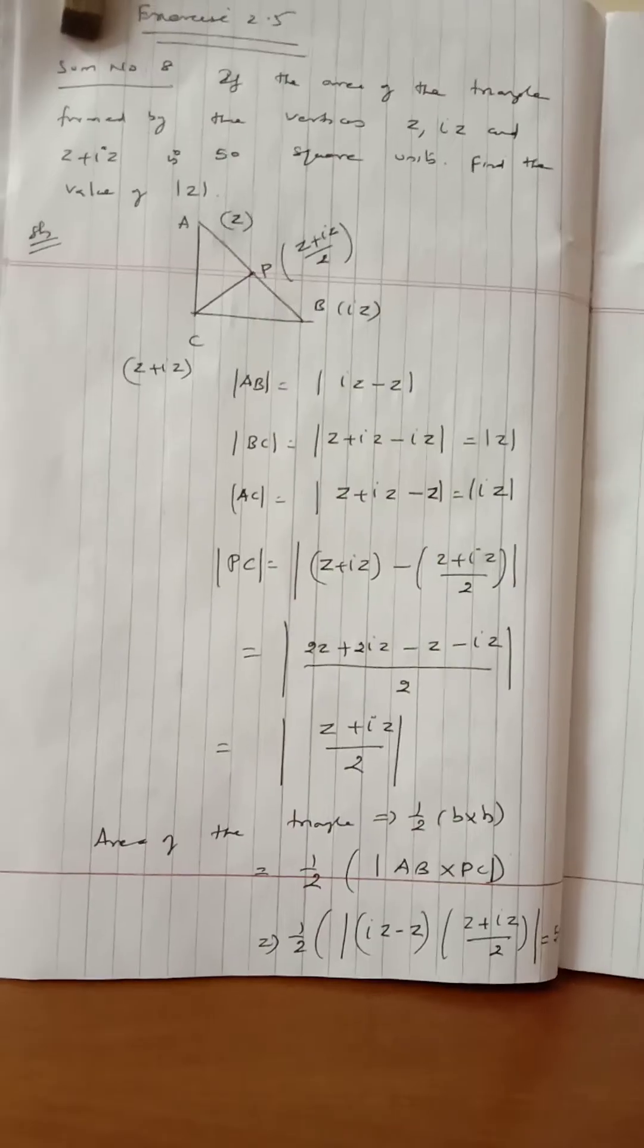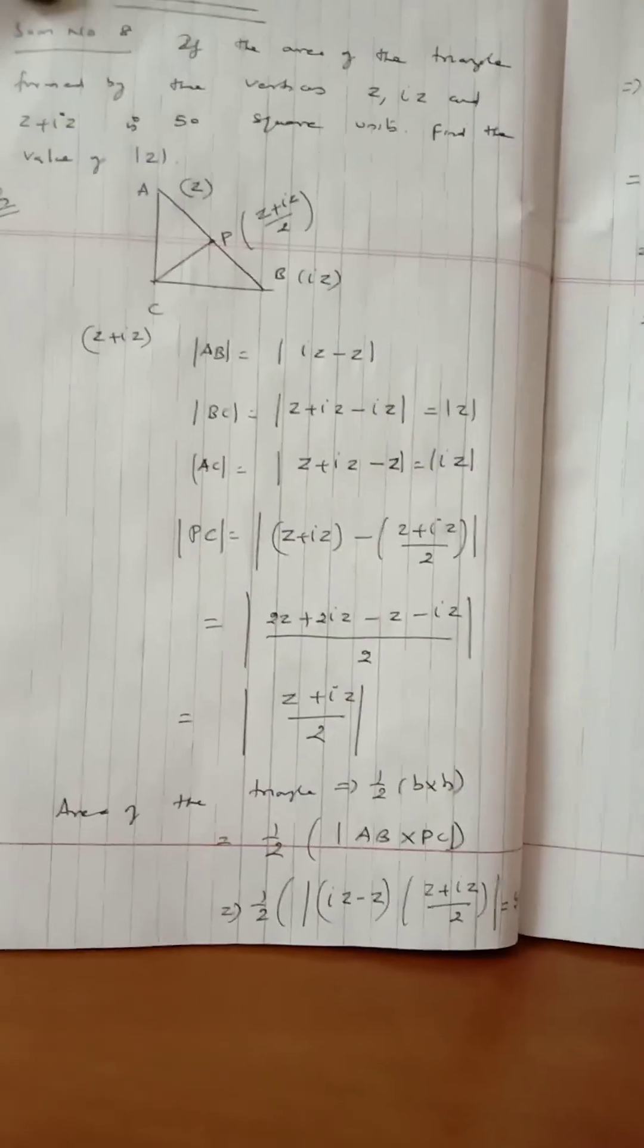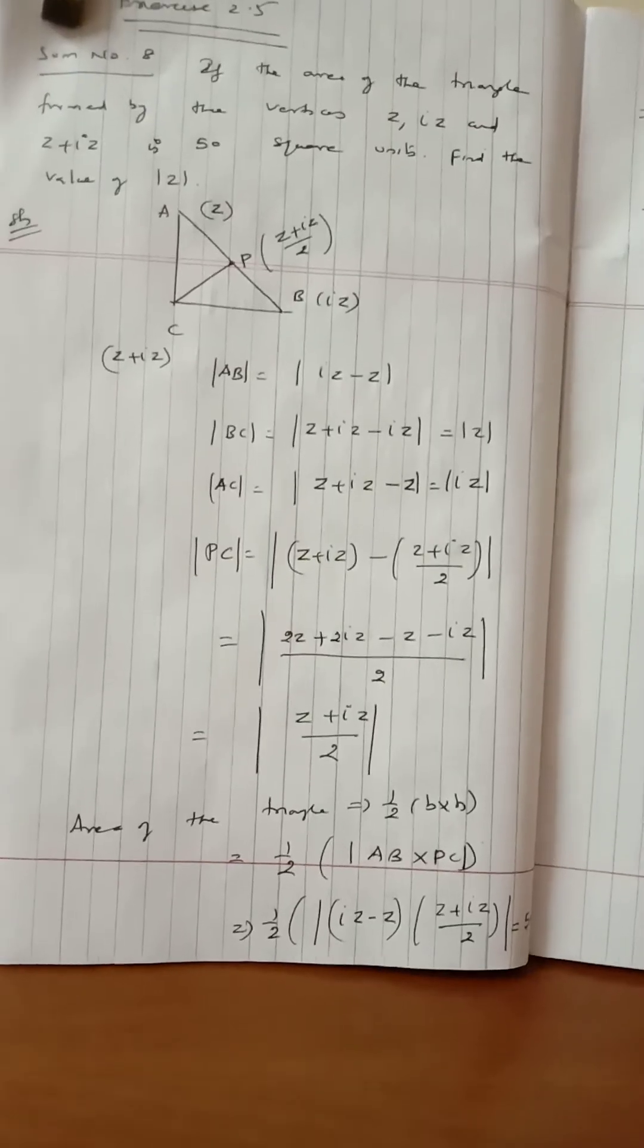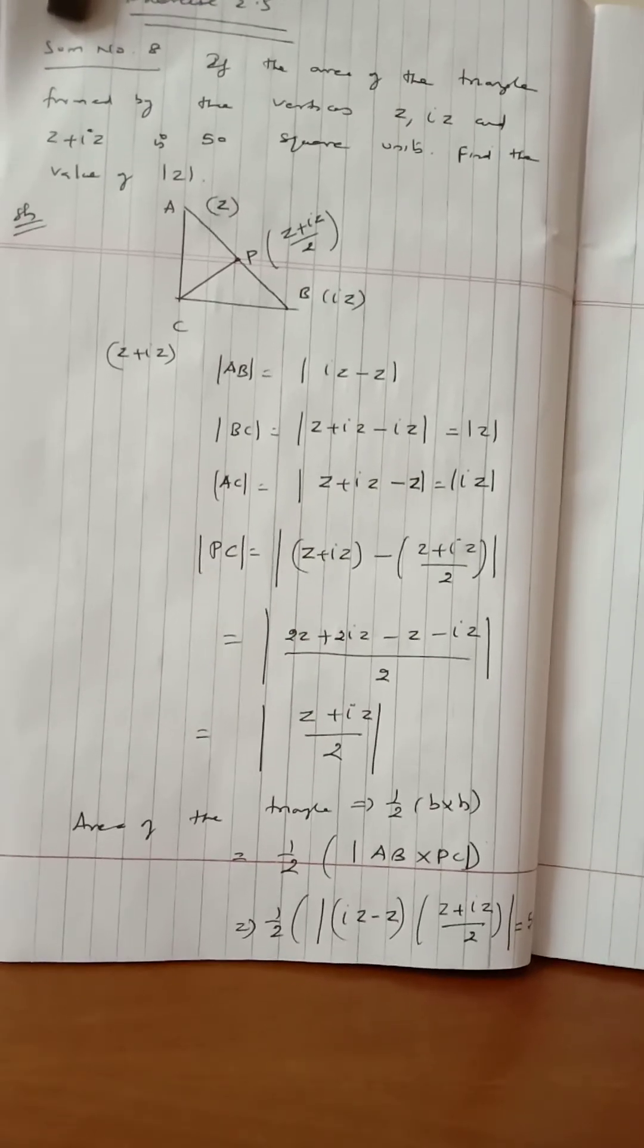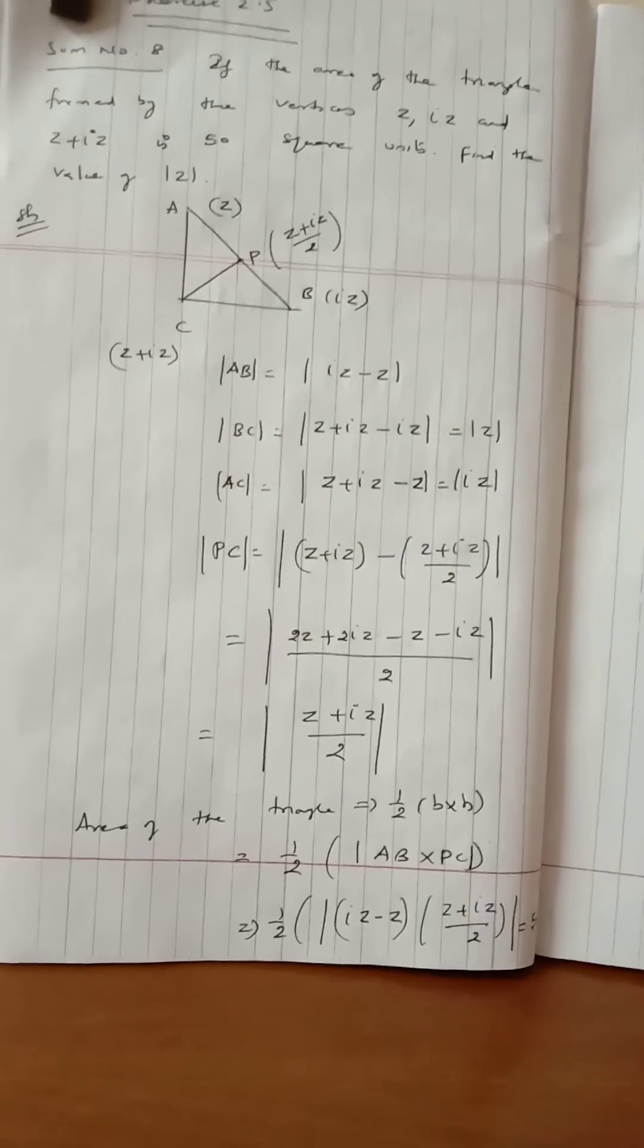50 square units equals half into AB, which is modulus of iz minus z, times modulus of z plus iz over 2, equals 50.